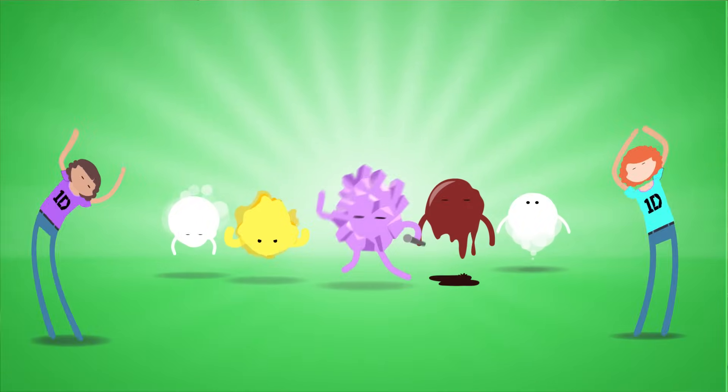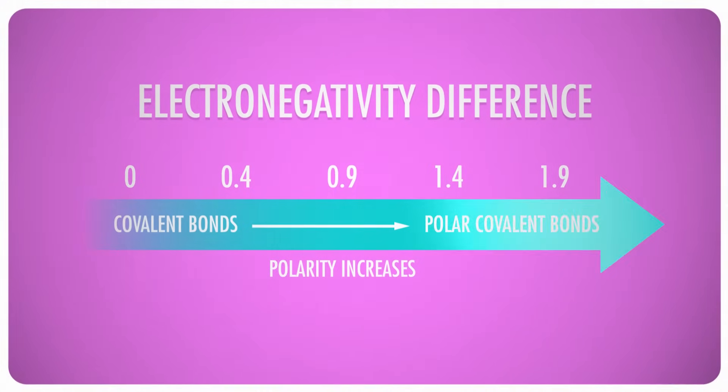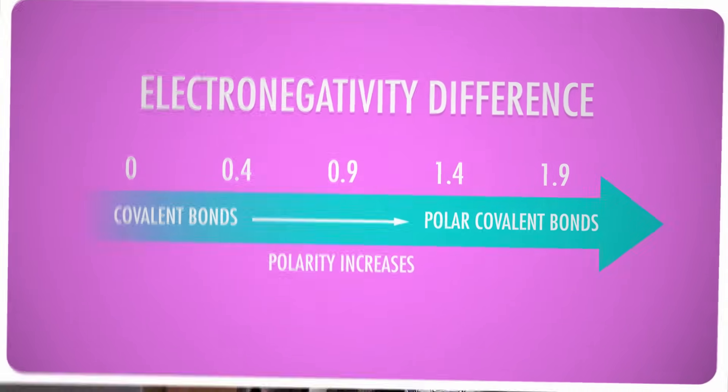So for polarity to occur in a molecule, you have to have two different elements at a minimum, and the difference between their electronegativities has to be 0.5 or greater. If that's the case, the outer electrons spend enough extra time around the element that's more electronegative that chemists label the molecule polar.